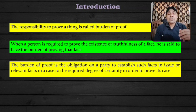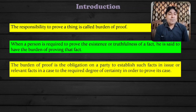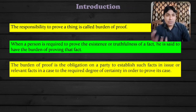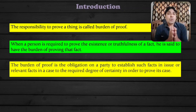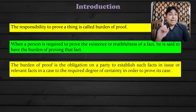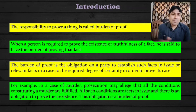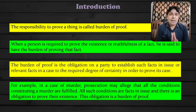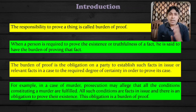Whenever any person wants to prove his case, wants to establish his case, wants to prove the obligation of any other party, then he has to prove it up to a certain degree of certainty. For example, in a case of murder, prosecution may allege that all the conditions constituting a murder are fulfilled. All such conditions are facts in issue and there is an obligation to prove their existence. The obligation is a burden of proof. In a murder case, it is the duty of the prosecution to prove the guilt of the accused person beyond all reasonable doubt.